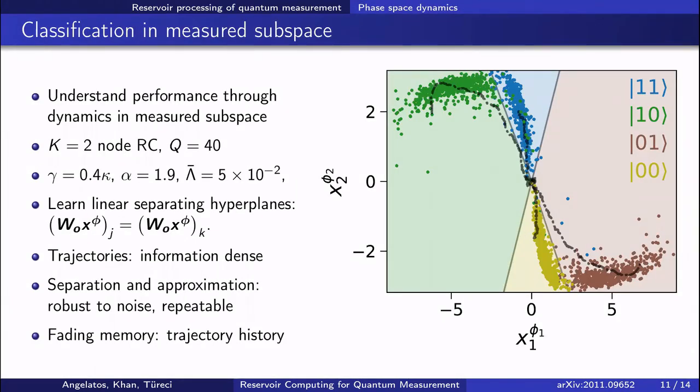So to do that, let's look at the measured subspace of a two oscillator network, which is something that can both still surprisingly accomplish this measurement task and that humans can sensibly visualize being in two dimensions.